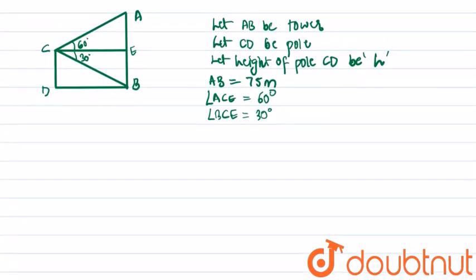So in triangle AEC, angle ACE is 60 degrees. Therefore tan 60 degrees equals opposite upon adjacent. Therefore root 3 equals AE upon CE.